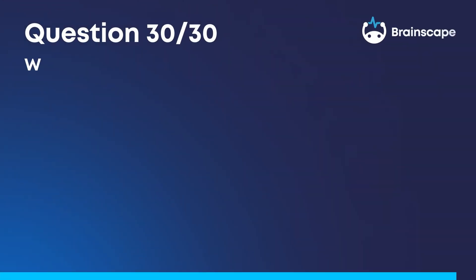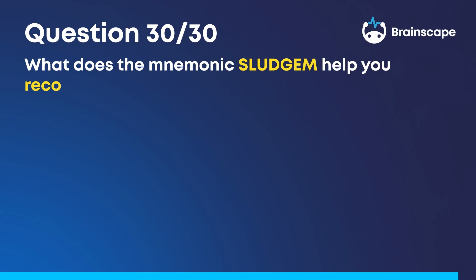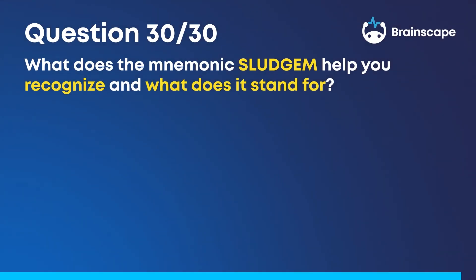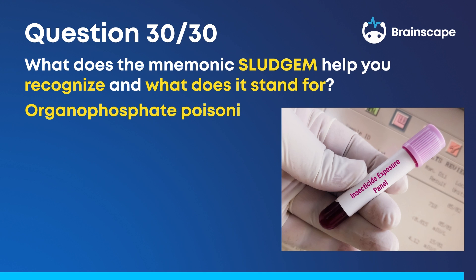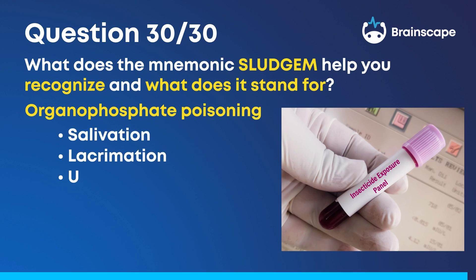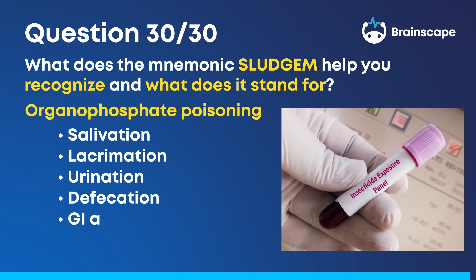Question 30. What does the mnemonic SLUDGEM help you recognize, and what does it stand for? It can help you recognize organophosphate poisoning. It stands for: Salivation, Lacrimation, Urination, Defecation, GI activity, Emesis, and Miosis.